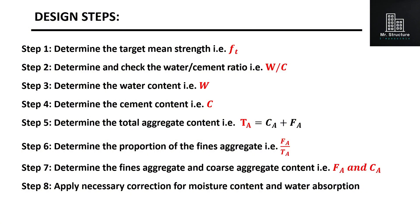The mix design can be carried out in eight steps, which can be seen on the screen. In step one, you determine the target mean strength FT, which is higher than the characteristic strength. In step two, you determine the water-cement ratio and check it with the maximum value. In step three, you determine the water content W. In step four, using the water-cement ratio and water content, you determine the cement content C and check it with the minimum value. In step five, you determine the total aggregate content, which is the sum of coarse aggregate and fine aggregate, CA and FA.